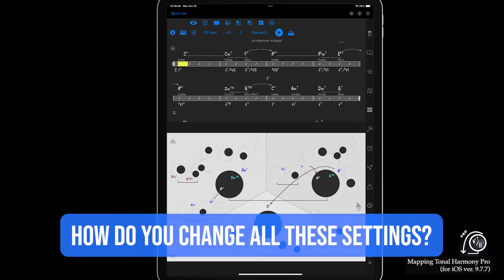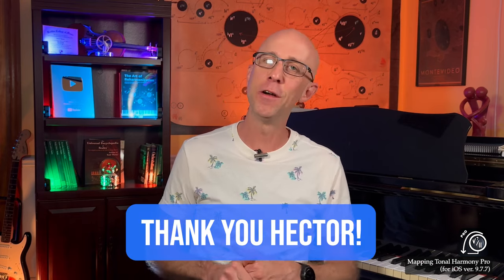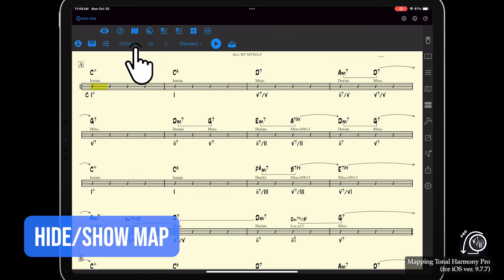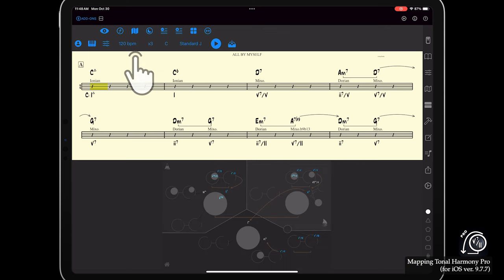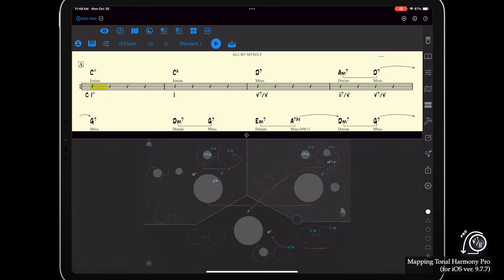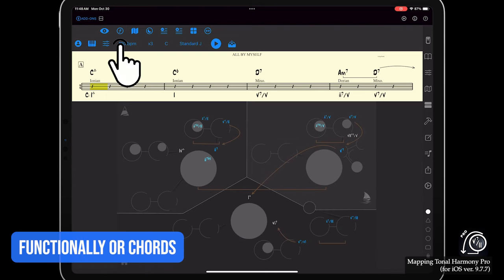But how do you change all these settings? Shout out to Hector Rivera for this awesome question. First, remember you can hide or show the map with this button here. You can zoom in and out by pinching on the map. You can also view the map functionally or with chords with the F button here.